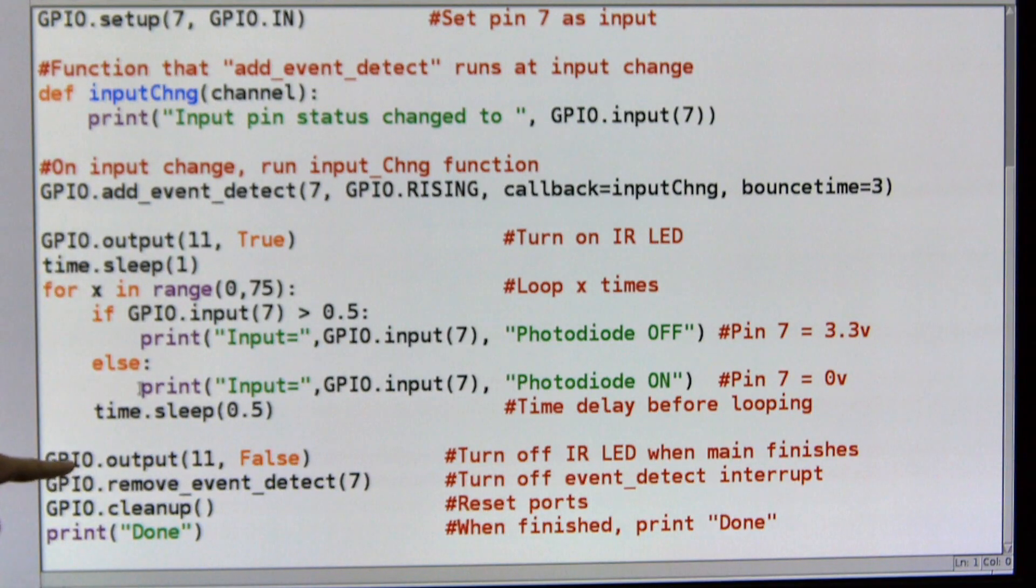And then down here when it's run through all of its loops, I just go and I turn off the LED. I turn off the event detect on pin 7. I do some cleanup and then I print done so I know that my computer program finished normally.